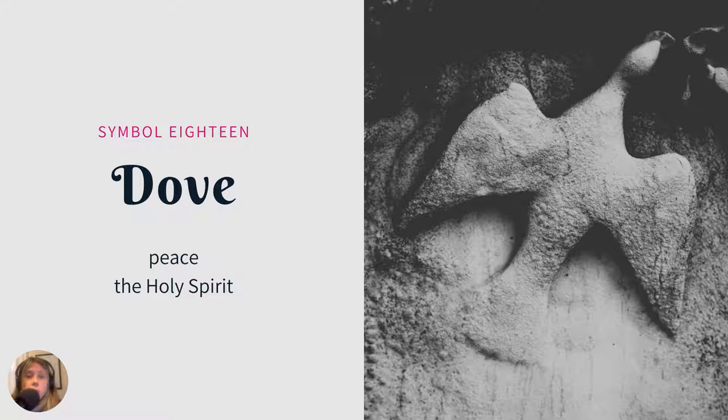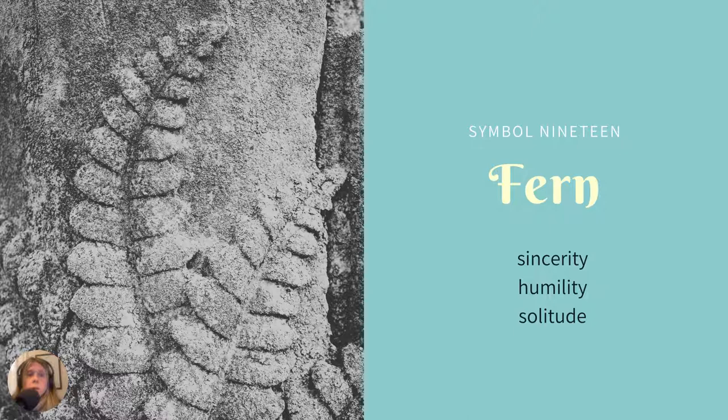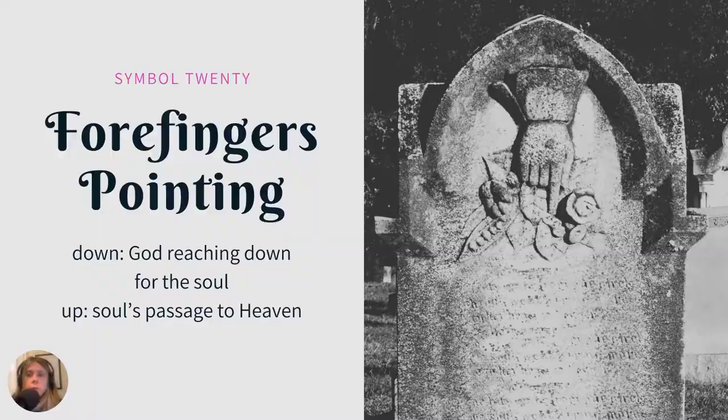The dove — in Christianity it can represent the Holy Spirit, or there's a more universal symbol of the dove representing peace. A fern is one of those Victorian flower languages. It can represent sincerity, humility, or solitude. Back in Victorian times, people would know exactly what the person was trying to say or the personality traits they were conveying.